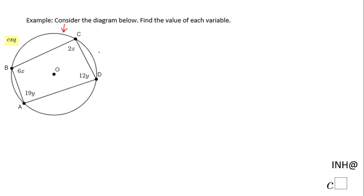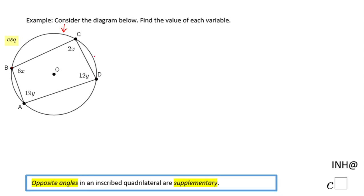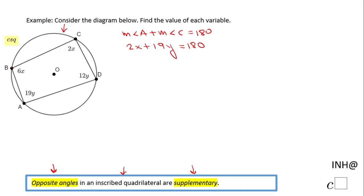One important property for an inscribed quadrilateral: opposite angles are supplementary. So angle A and angle C are supplementary. The measure of angle A plus the measure of angle C equals 180, which means 2X plus 19Y equals 180. Similarly, angle B and angle D are also supplementary because they are opposite angles in this inscribed quadrilateral, so the measure of angle B plus the measure of angle D equals 180.